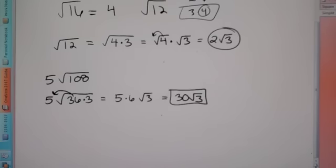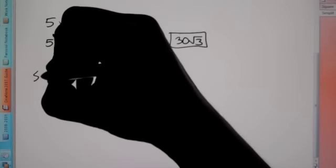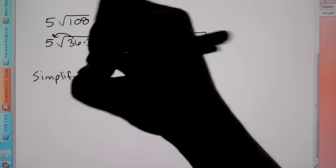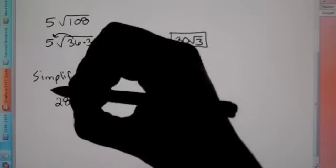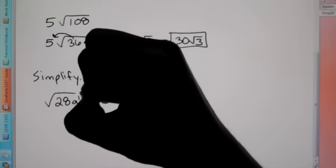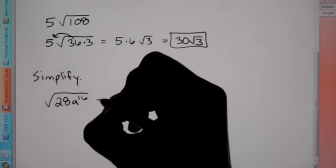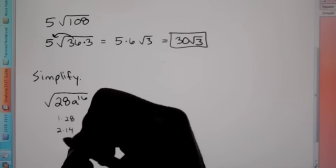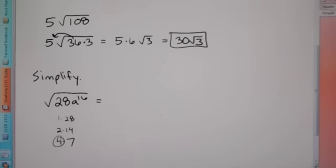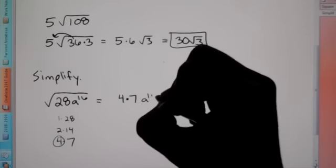The next problem requires variables as well as numbers. We need to simplify √(28a^16). The number 28 is not a perfect square, but its factors are 1×28, 2×14, and 4×7 — and 4 is our perfect square. So we rewrite this as √(4 × 7 × a^16).